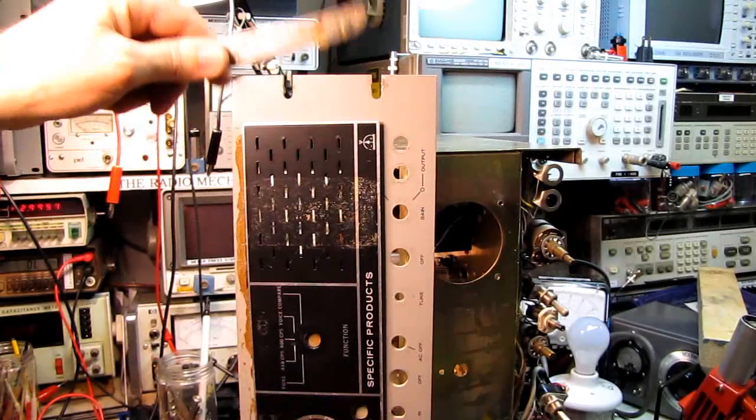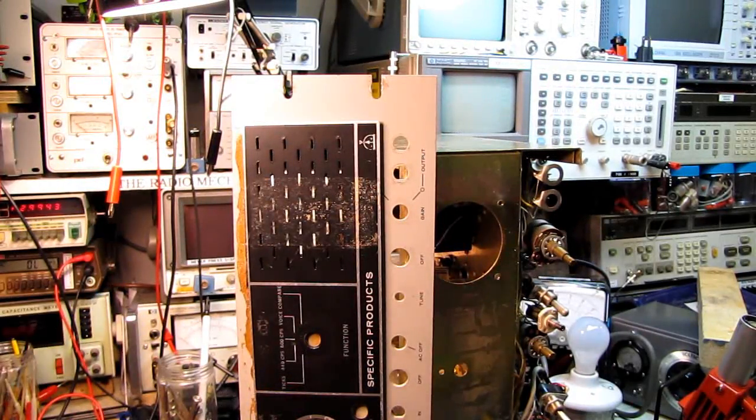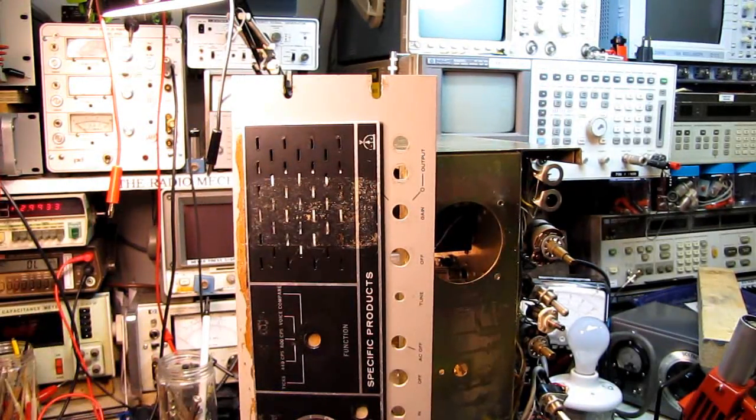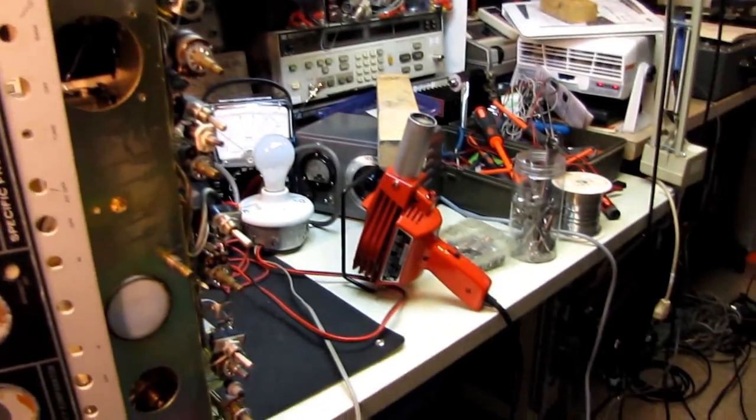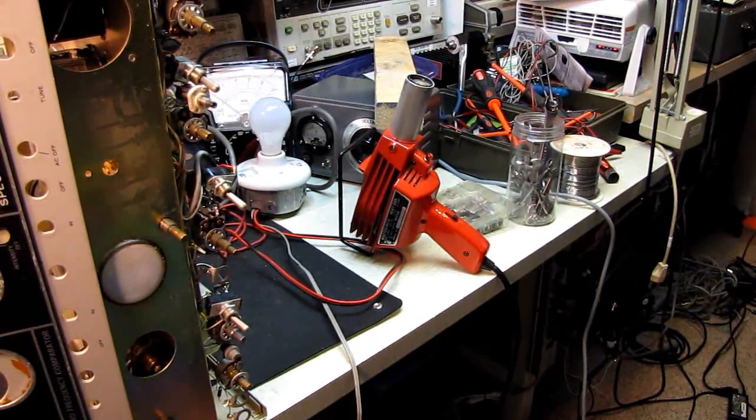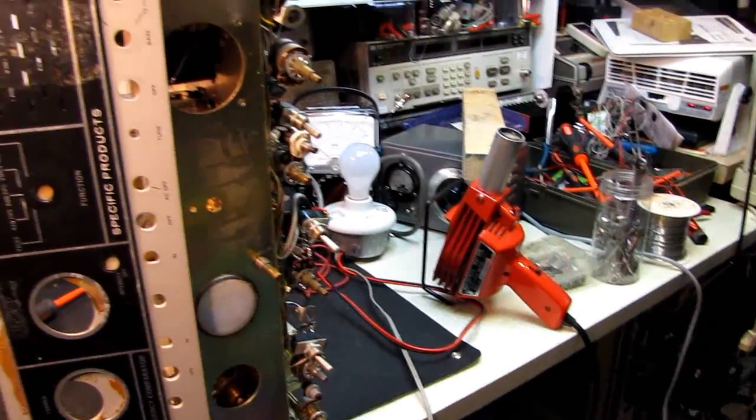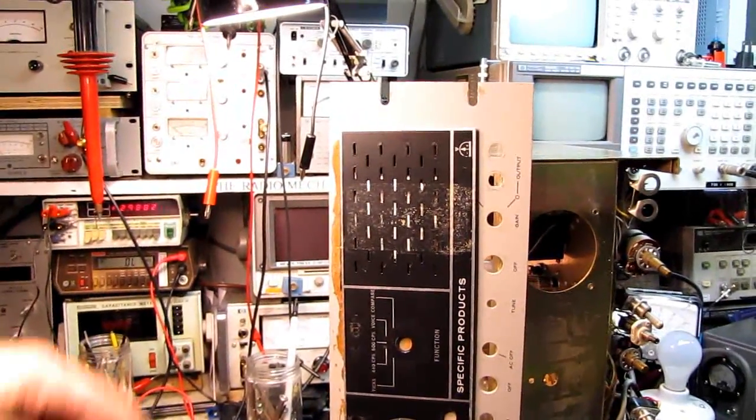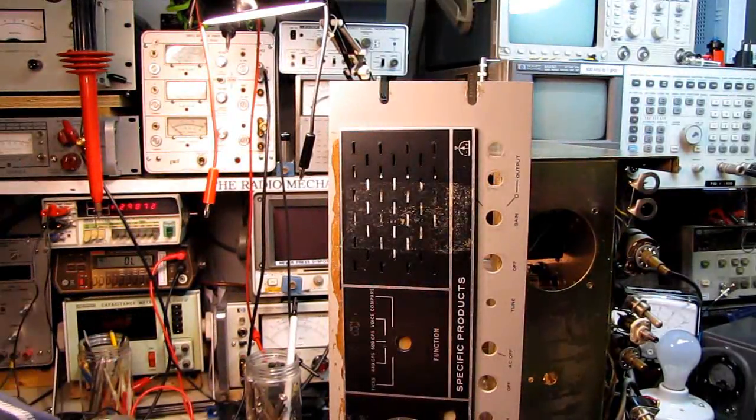We don't want to use one of those industrial paint stripper guns. That would be way too hot. The gun I used is one that's typically used in industry for heat shrink purposes. It's a much lower temperature. It does get pretty hot, but it's a lot gentler.